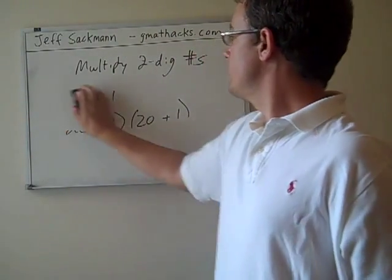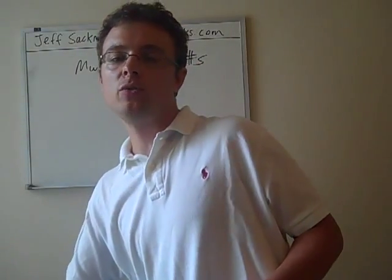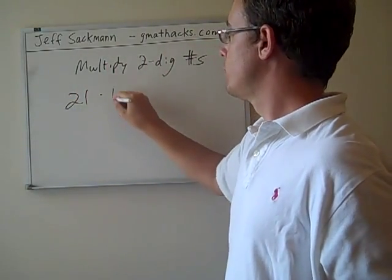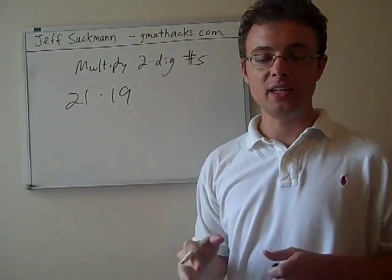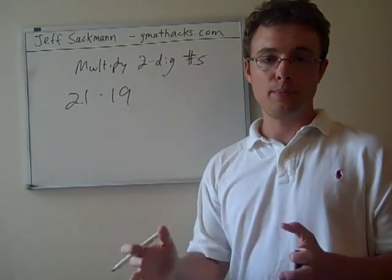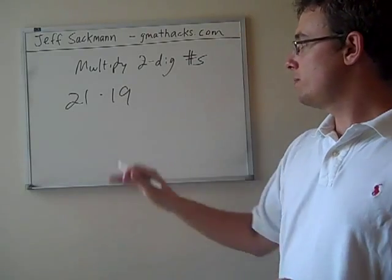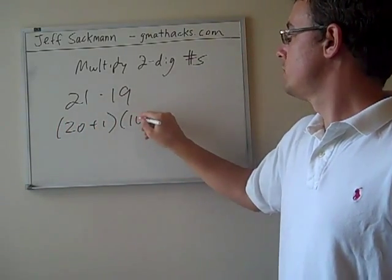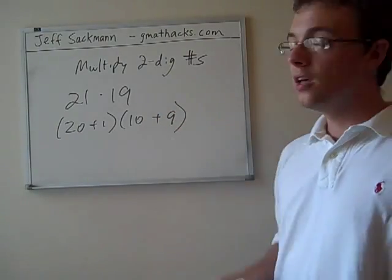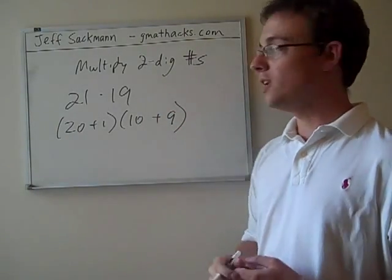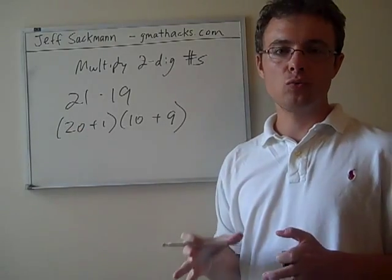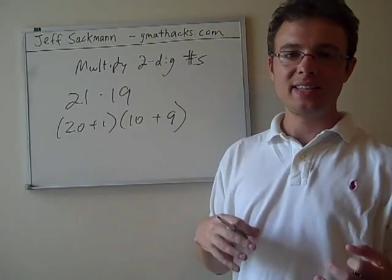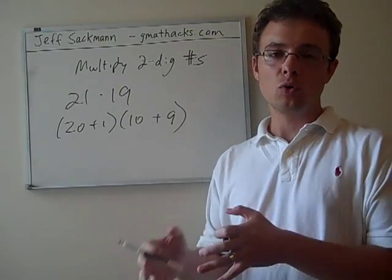The other thing I like about this technique is that you don't have to use addition. Let's say instead of 21 times 21, you're doing 21 times 19. We want to keep all these steps as simple as possible. If we did something like 20 plus 1 times 10 plus 9, it's still pretty easy, but as soon as we get that 9 in there, everything gets a little more complicated. 9s, 7s, stuff like that introduce more steps in which we can make stupid mistakes under the pressure of the test.